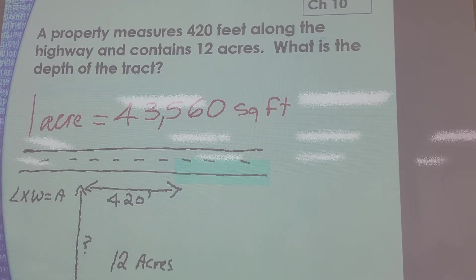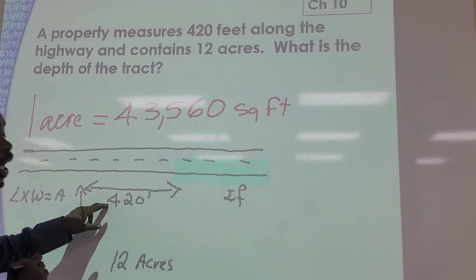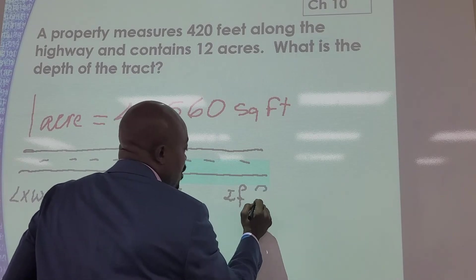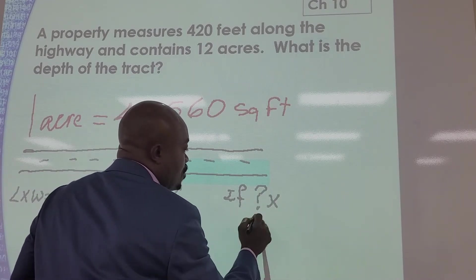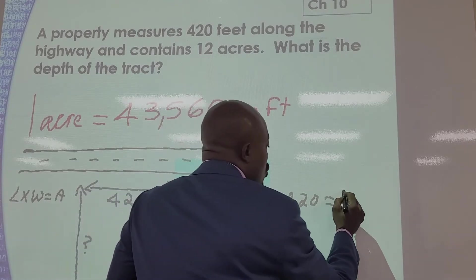So with that said, if unknown, we don't know this. If the unknown times 420 equals 12 acres...